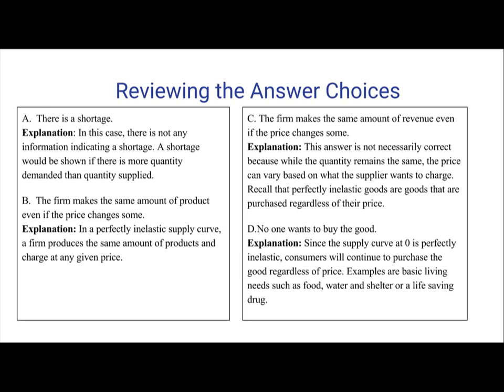Answer B: the firm makes the same amount of product even if the price changes some. In this case, it would be a perfectly inelastic supply curve. In a perfectly inelastic supply curve, a firm produces the same amount of products regardless of any given price. So they can charge a low price or a high price, but a firm with a perfectly inelastic supply curve would charge the highest price to maximize profits.